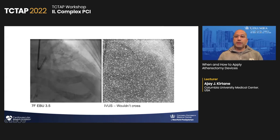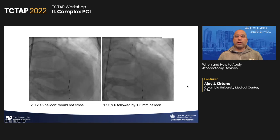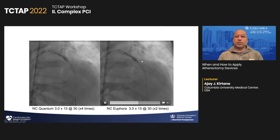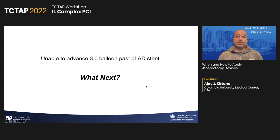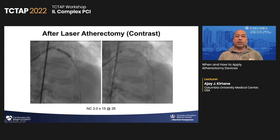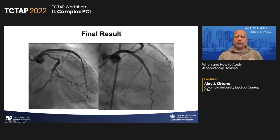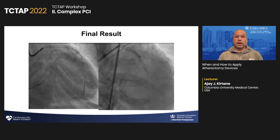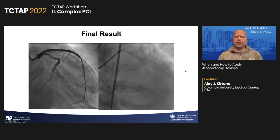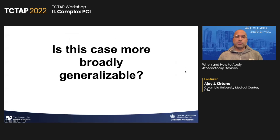In the proximal to mid-LAD there's severe under-expansion of the stent. Despite the use of multiple balloons, an IVUS wouldn't cross and multiple balloons wouldn't cross. Ultimately, this patient had to have laser atherectomy with contrast to expand these stents. The question is: how could we have prevented this in the first place? Here is a final good result, but a lot of work and a lot of pain for this patient with recurrent angina and three separate procedures.